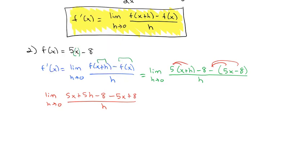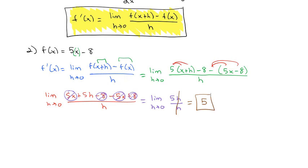We simplify by distributing both the 5 and the negative sign, giving us the limit as h goes to 0 of 5x plus 5h minus 8 minus 5x plus 8, all over h. We can cancel terms: 5x minus 5x and negative 8 plus 8 both go to zero, leaving us with the limit as h goes to 0 of 5h over h. The h's divide out, leaving just 5. That is our derivative — the slope of the tangent line and the rate of change for f(x) = 5x minus 8.